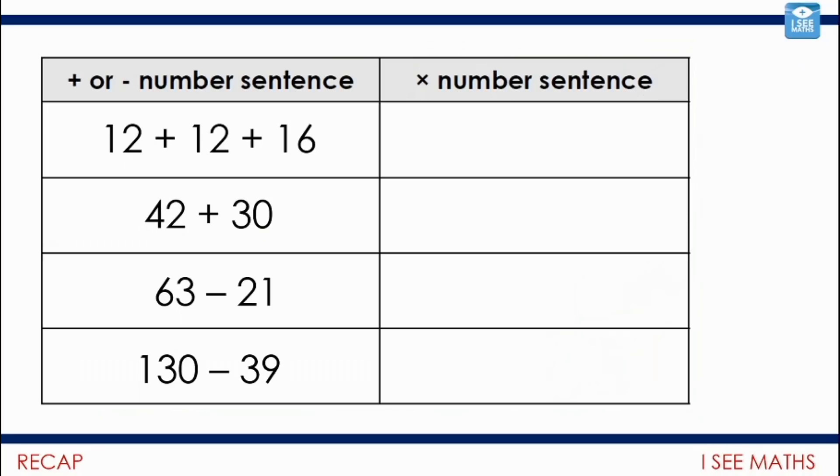And so let's have a little recap from where we got to yesterday. We were looking at addition and subtraction number sentences and see how they link to multiplication number sentences. So, for example, 12 plus 12 plus 16. I have to think, 12 and 16 are in which times table? Which is a common factor of 12 and 16? And an example is 4.